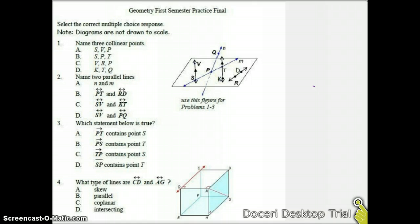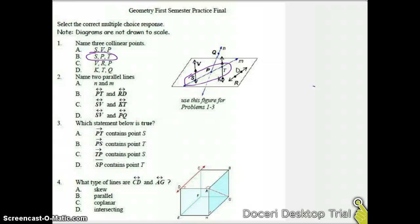We need to name three collinear points. Looking at the diagram we have off to the right, collinear means they're going to be on the same line. The one I see is SPT, because SPT are all on that line M, so those would be collinear. SVP - V is not on the line with S and P. VRP - R is the name of the plane, so that's out. And KTQ - Q is not even on the plane, so that's definitely not going to be collinear.